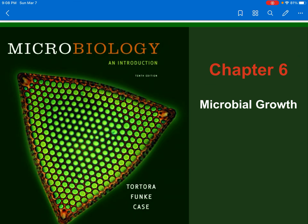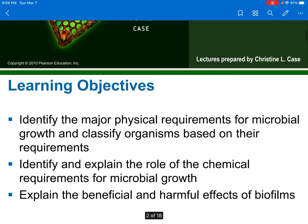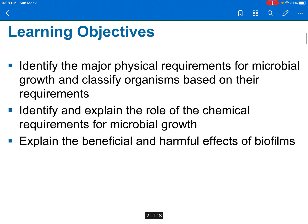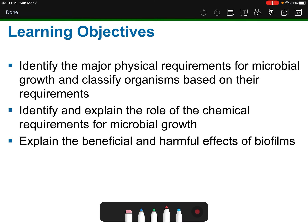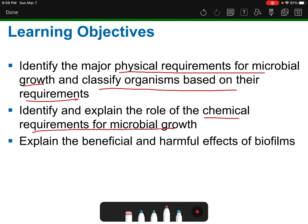We're starting a new chapter on microbial growth. Our learning objectives for this first section are to identify the major physical requirements for microbial growth and classify organisms based on those requirements, as well as the chemical requirements for growth. We're also revisiting biofilms, which we touched on in chapter one, including both the beneficial and harmful effects of biofilms.